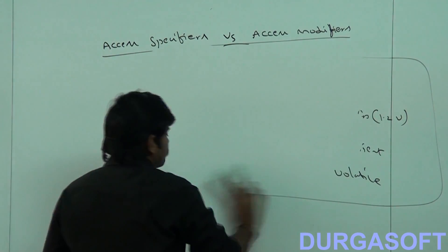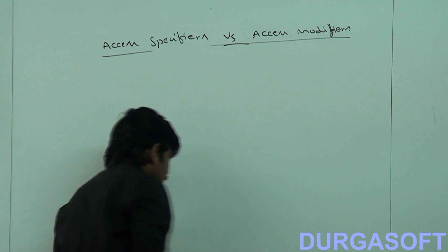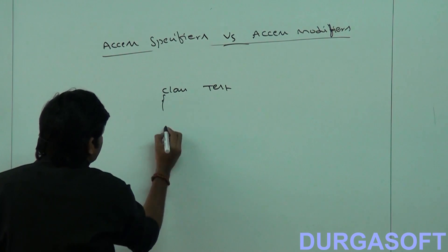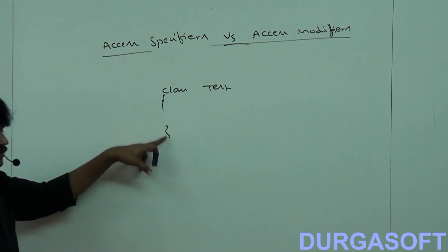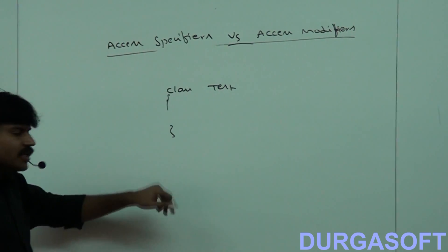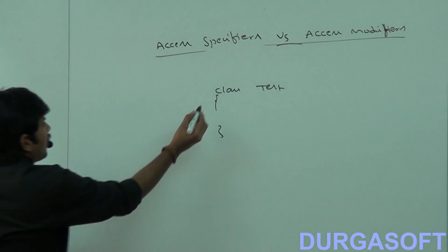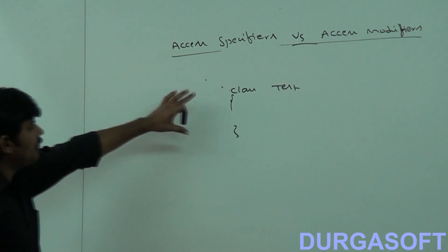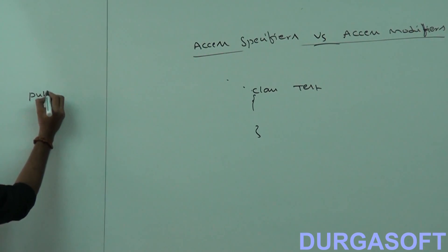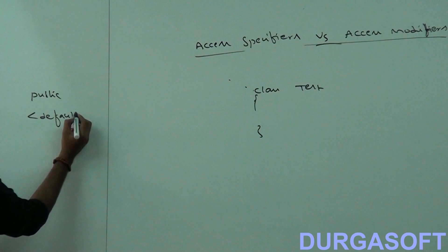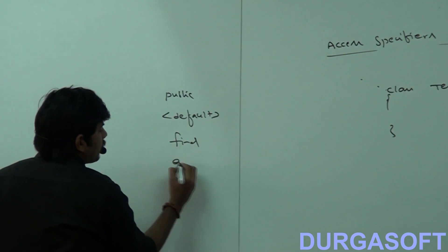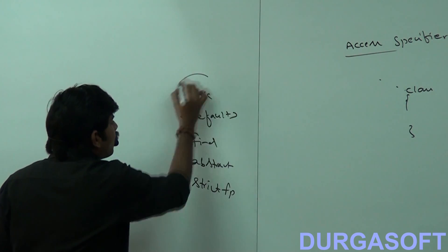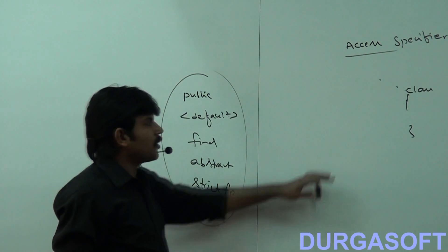I am taking one class test. This is outer class, top level class. Which modifiers applicable for top level classes? Just in last class, we may cover the only applicable modifiers for top level classes are public is allowed, default is allowed, final is allowed, abstract is allowed, and strict FP. These are the only modifiers applicable for top level classes.